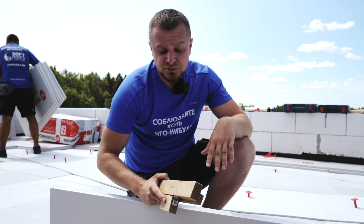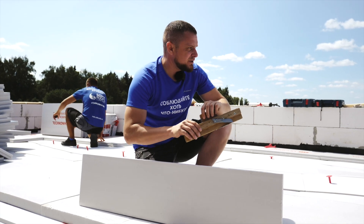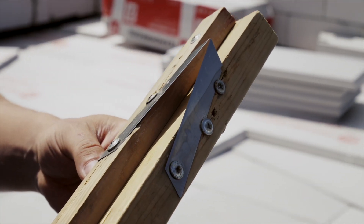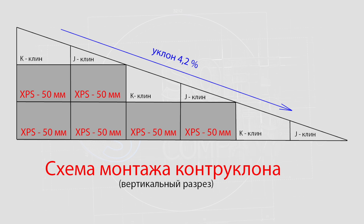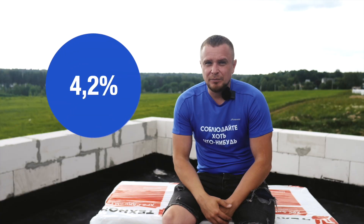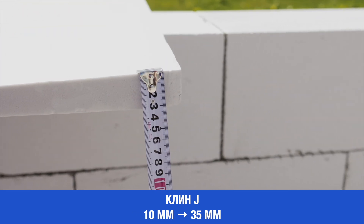Слои утеплителя укладываются всегда со смещением, чтобы перекрыть швы предыдущего слоя целой плитой. Когда подрезаем плиты, возникает потребность формирования L-кромки — для этого используем самодельную приспособу. Процесс укладки контруклонов немного похож на процесс укладки основного уклона, но отличается. Комплект контруклона также состоит из двух видов плит, но разрезанных поперёк листа — они формируют уклон 4,2%, в отличие от основного уклона, который формирует уклон 2,1%. Маркировка J и K, а не A и B. Клин J — толщина от 10 мм до 35 мм, клин K — от 35 мм до 60 мм. Основной уклон разрезан вдоль, а контруклон — поперёк, тем самым сократилась длина реза и уклон увеличился.